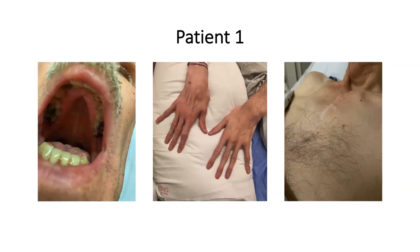Let's look at patient number one, presenting with dyspnea. Here are three images: one of the patient's mouth, one of the patient's hands, and one of the patient's chest. There's a high arched palate, arachnodactyly — spider-like long thin fingers — and a pectus deformity in the form of pectus carinatum. This looks like somebody with Marfan syndrome. When given these clues side by side, it's not that difficult to come up with a unifying diagnosis.